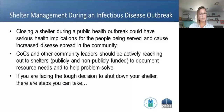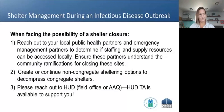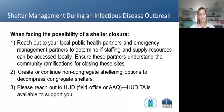Steps for shelters considering closure: first, reach out to local public health and emergency management partners to determine if staffing and supply resources can be locally accessed, and make sure partners understand the community ramifications for closing. Second, create or continue non-congregate sheltering options — hotels, dorms, etc. — to decompress congregate shelter spaces. Third, technical assistance is available through HUD, your field office, or through the AAQ to get connected to people who can help.